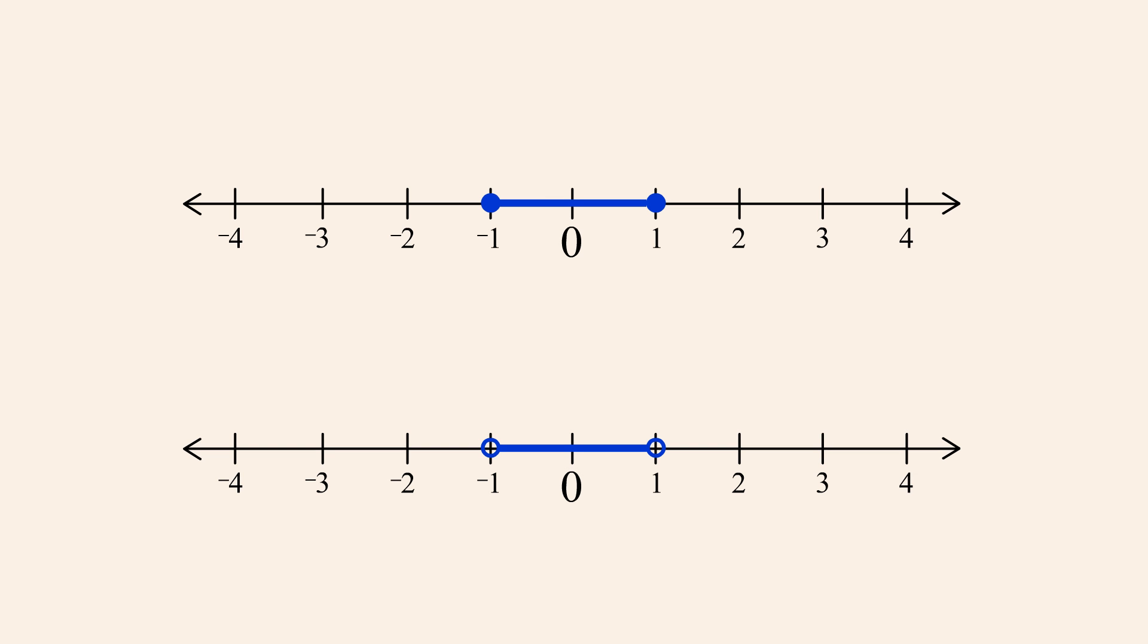Likewise, whether or not an interval includes its endpoints, those endpoints bound the interval to a finite length on the number line. So left and right endpoints act as lower and upper bounds for the numbers in an interval. No number contained in an interval is less than its lower bound or greater than its upper bound.